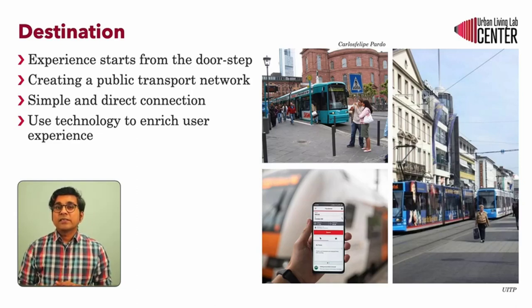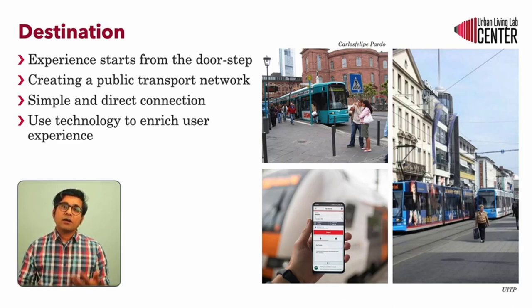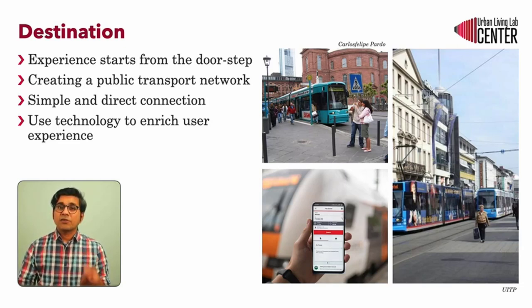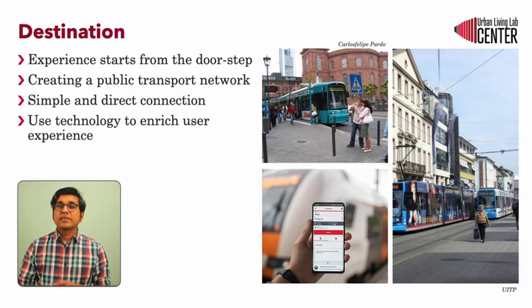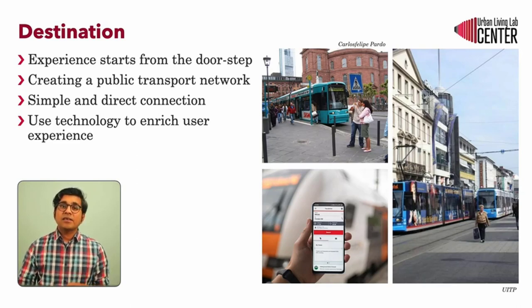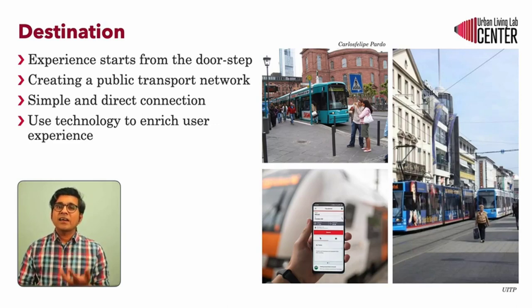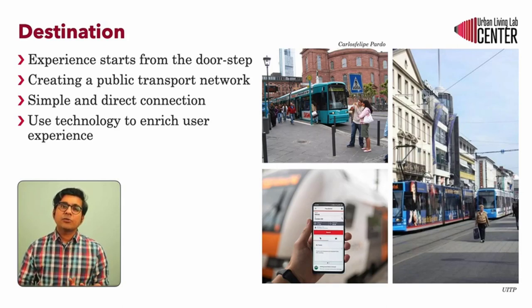For a motorist, the journey experience starts from the doorstep — getting into the parked car at their home. Similarly, for a public transport user, the same is true: they need to get to the transit stop or station, which is usually either a walking or a cycling trip. The distance they need to walk to get to the station and the condition of the infrastructure to get there makes an important difference. The same applies when they get to their final destination. So when we plan transit in cities, density and the kind of land use play an important role, and having transit stops in residential neighborhoods and in places where people shop or work can enrich the experience.